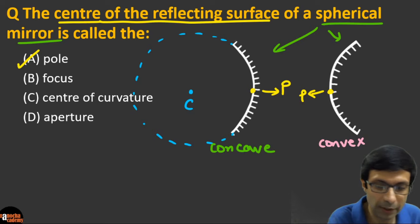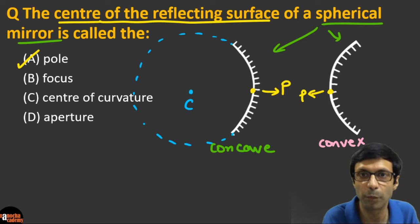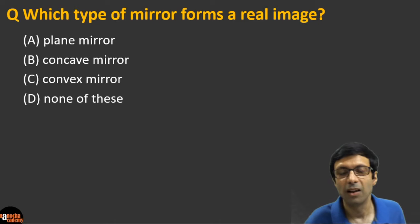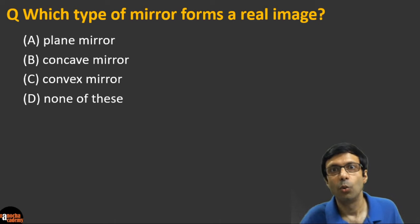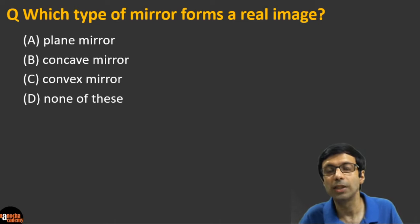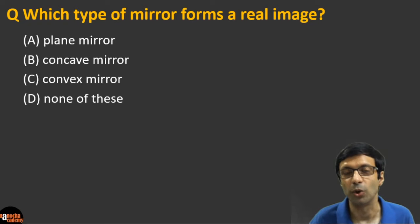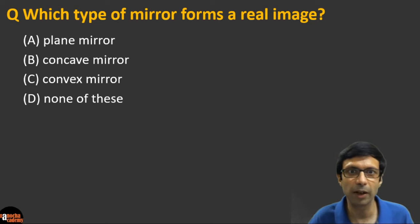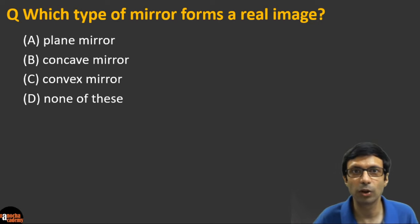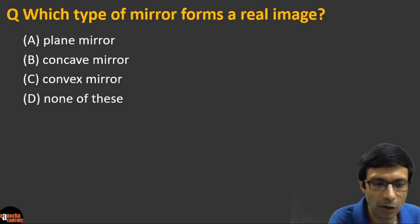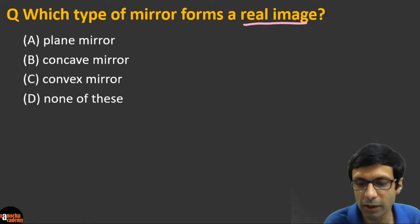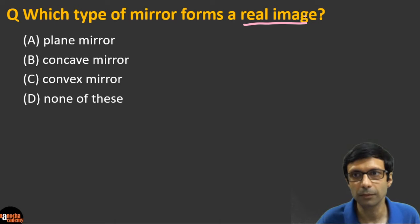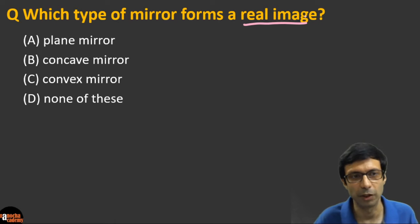Please remember: don't confuse the pole with the center of curvature. The pole is the center of the reflecting surface. The center of curvature is the center of the full imaginary sphere. Now: which type of mirror forms a real image — (a) plane mirror, (b) concave mirror, (c) convex mirror, or (d) none of these?